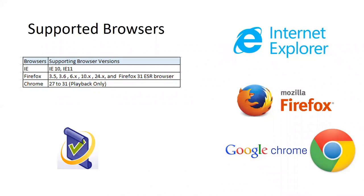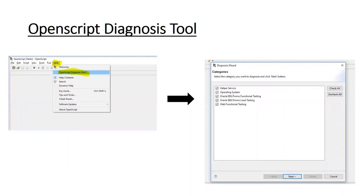Before we start, let's see what browsers are supported with the latest OATS OpenScript 12.5. It supports Internet Explorer, Mozilla Firefox, and Google Chrome. Chrome is used for playback. The most preferred browser when working with Oracle EBS or Oracle Fusion applications is IE, because of security and stability. Firefox is also used, but my personal preference is IE.